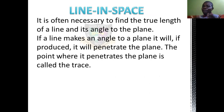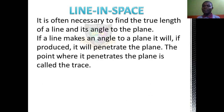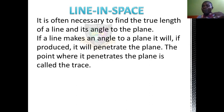It is often necessary — you do not do drawing and not get the true length. If the true length is not gotten, then you don't have the actual true length of the line. And then the angle to the plane — it could be the angle made to the horizontal plane or the angle made to the vertical plane. If a line is at an angle to the plane, it produces a particular angle; it will penetrate that plane. The place where that line penetrates the plane is called the trace, or the true trace of that particular line. That's what we are looking at.